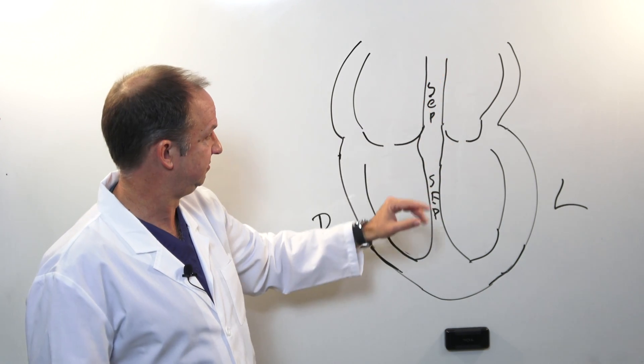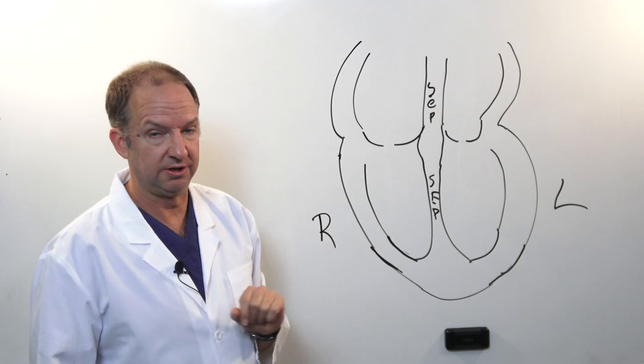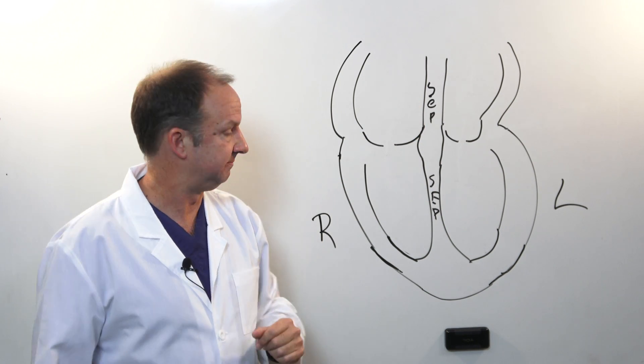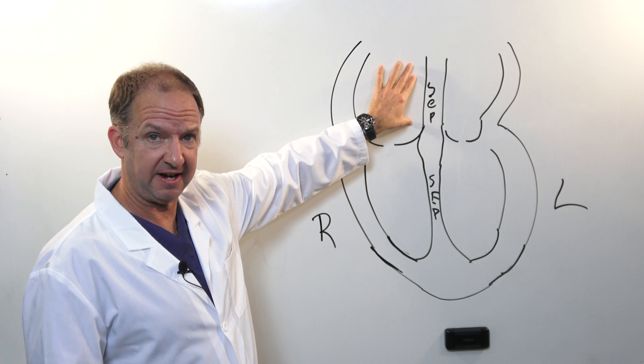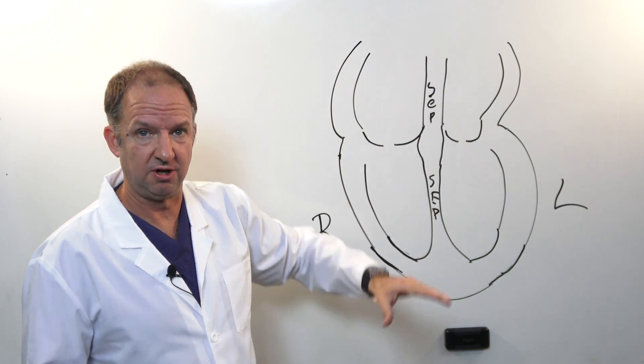On the upper chambers, the atria, this wall is called the atrial septum. A disease or a process that affects the wall or the septum is called a defect.